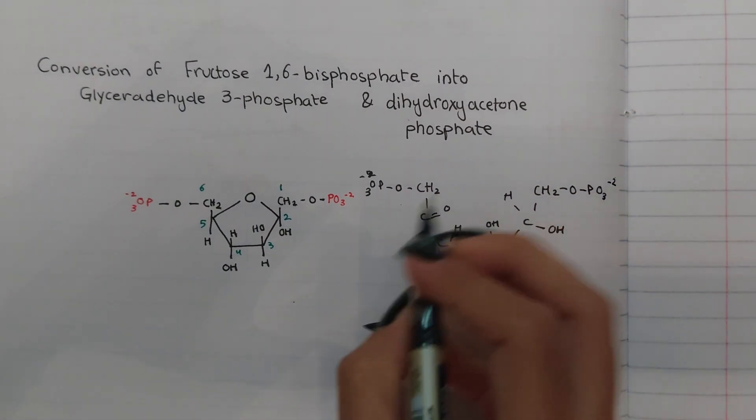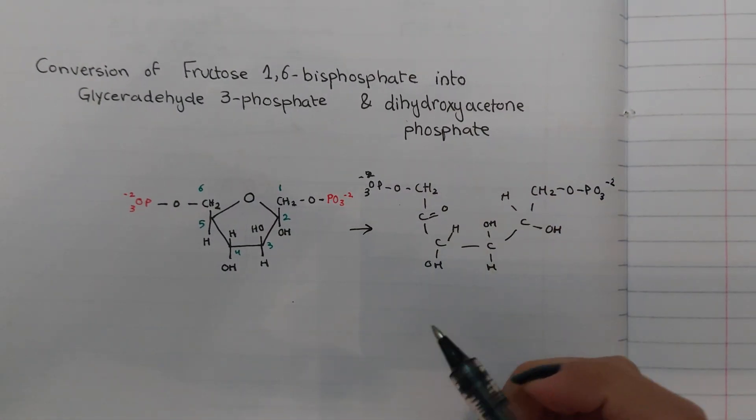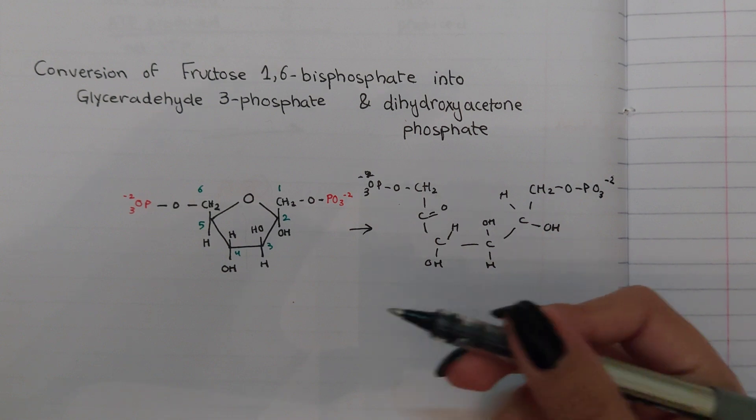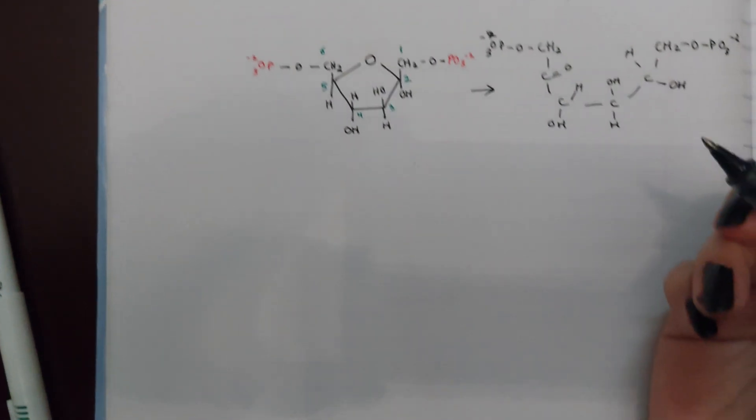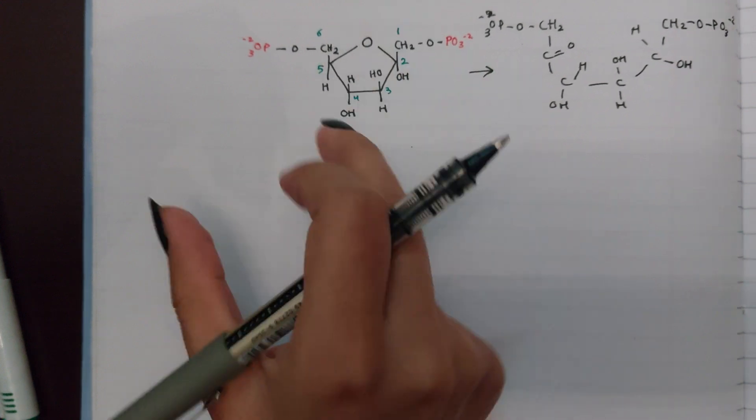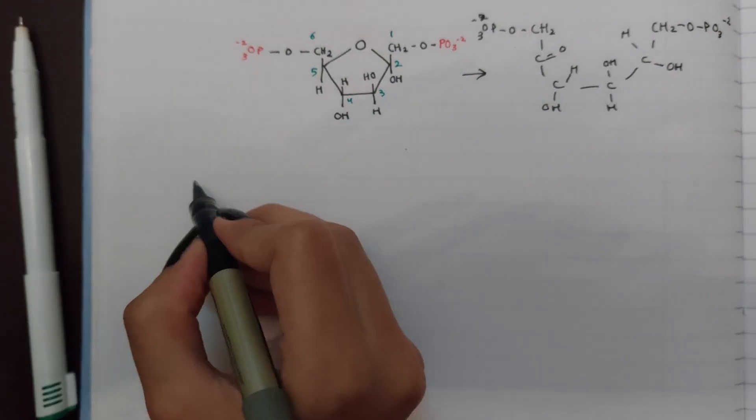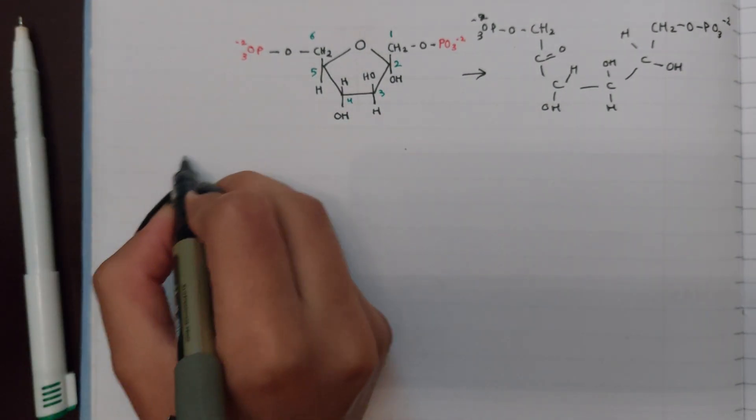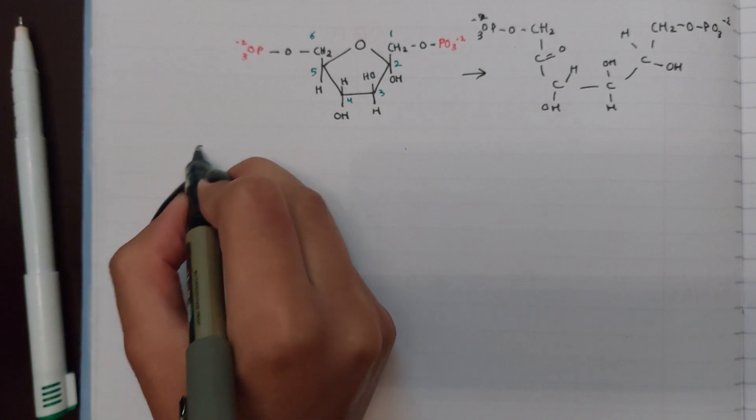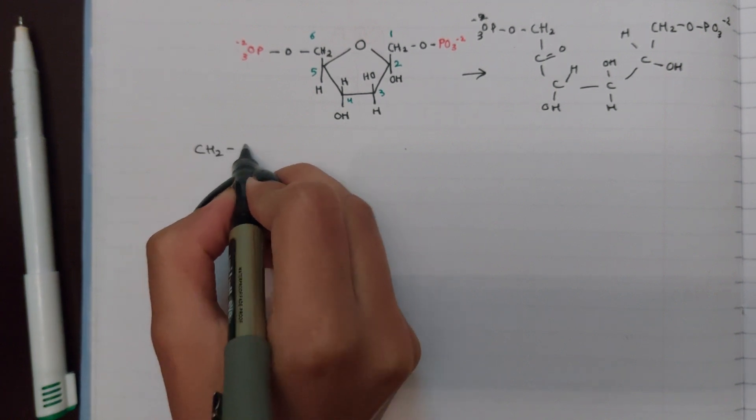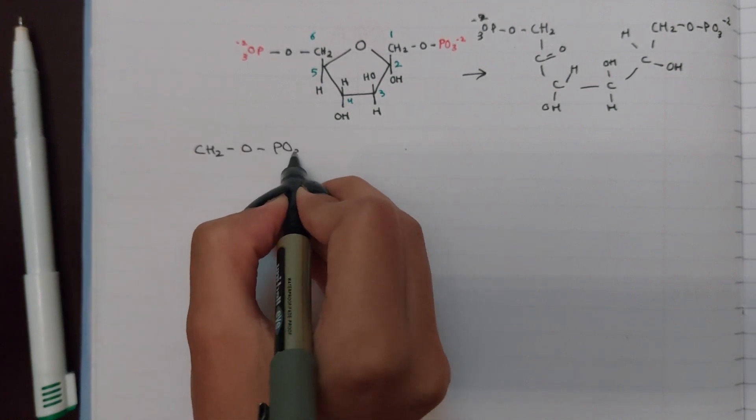I'm sure this looks a bit weird, so to make it even more easier to understand, I will make an open chain structure. CH2-O-PO3^-2, here and here.